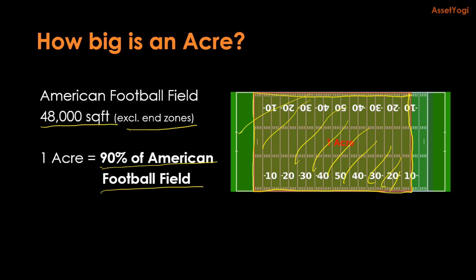And if you have to compare it with tennis courts, then one tennis court is about 2,808 square feet. And one acre is typically about 16 tennis courts.